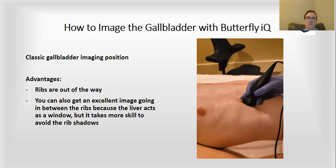Turning it perpendicular to the ribs gives more of the short axis or transverse view of the gallbladder. The advantage of this position is that the ribs are out of the way, which can make things pretty easy.